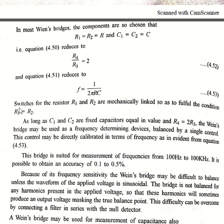Now reducing the imaginary part we will have f = 1/(2πRC). The switches of resistor R1 and R2 are mechanically linked so as to fulfill the condition R1 = R2. As long as C1 and C2 are fixed capacitors which are having equal value and R4 = 2R3, the Wien's bridge may be used as a frequency determining device balanced by a single control.